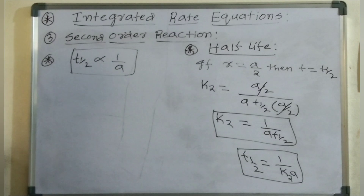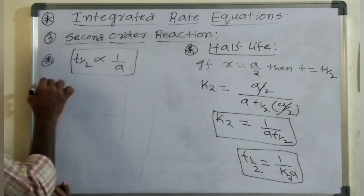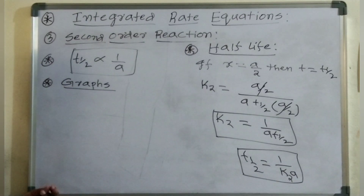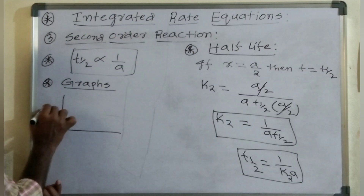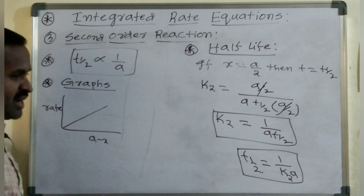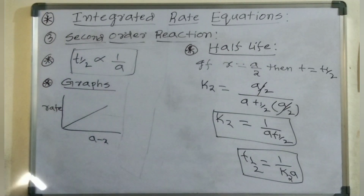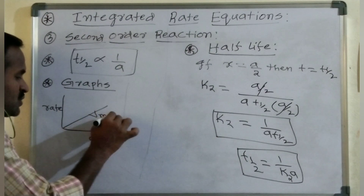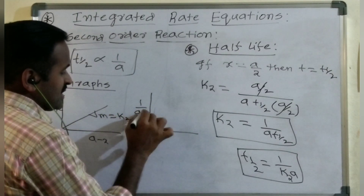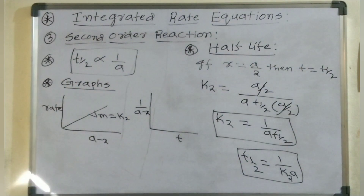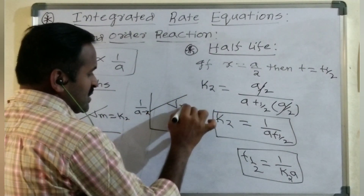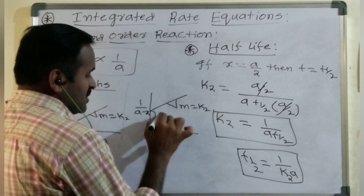Now we will talk about graphs. From the graphs point of view: first, if you plot rate versus (A minus X) concentration on the X axis and rate on the Y axis, you get a straight line passing through the origin, with slope M equals second order rate constant K2. Second, if you plot 1/(A minus X) on the X axis versus time on the Y axis, you get a positive slope line with M equals K2 and intercept equals 1/A.